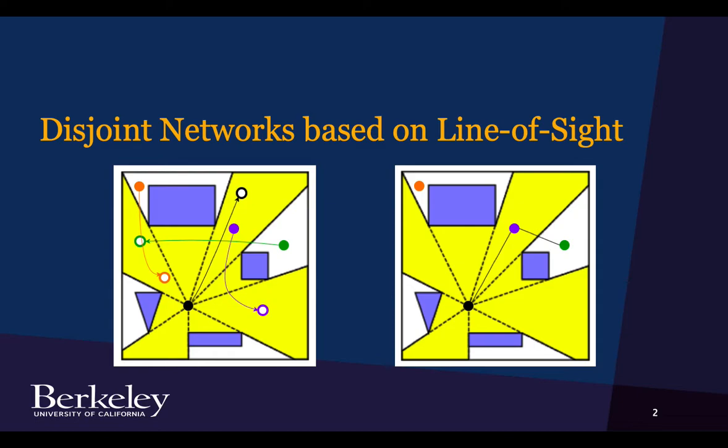For example, if we're looking at this setting on the screen with the four agents and focusing on the black agent, black agent can only see the purple agent. So the purple agent is the only one that's in its yellow line of sight region, assuming that all of these bluish regions are obstacles.